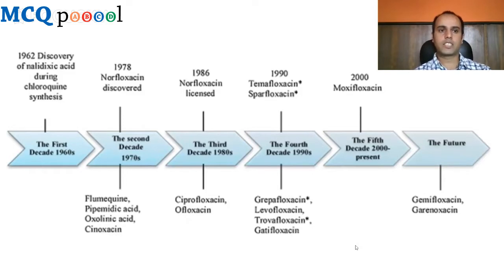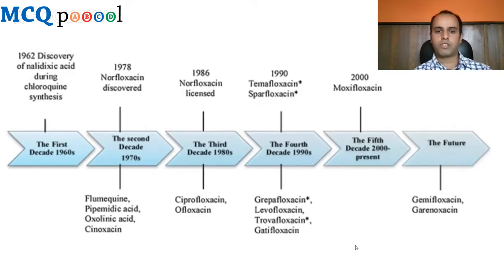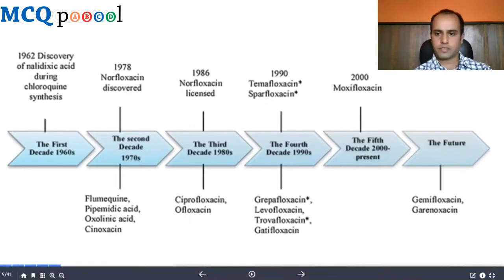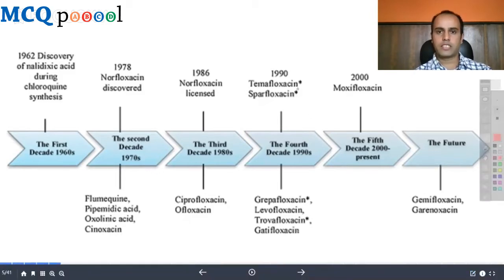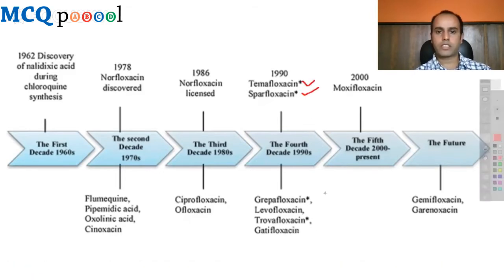Looking at the timeline: in 1962, nalidixic acid was discovered during chloroquine synthesis. Then came norfloxacin, cynoxacin, oxolinic acid, ciprofloxacin, and ofloxacin. Later additions include temafloxacin, sparfloxacin, grepafloxacin, levofloxacin, trovafloxacin, gatifloxacin, moxifloxacin, gemifloxacin, and garenoxacin.